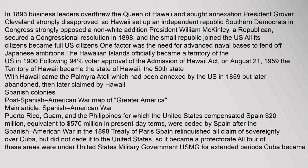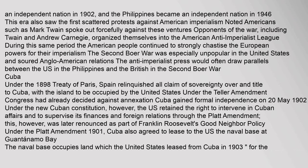Spanish colonies: Post Spanish-American War map of Greater America. From the Spanish-American War, the U.S. gained Puerto Rico, Guam, and the Philippines, for which the United States compensated Spain $20 million, equivalent to $570 million today. Cuba became an independent nation in 1902, and the Philippines became an independent nation in 1946. This era also saw the first scattered protests against American imperialism.